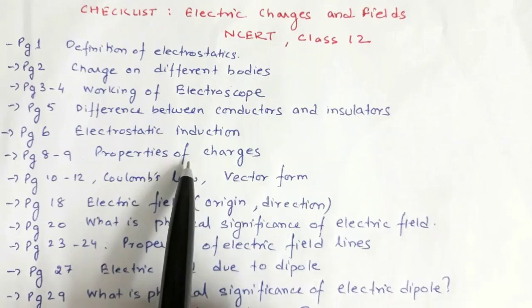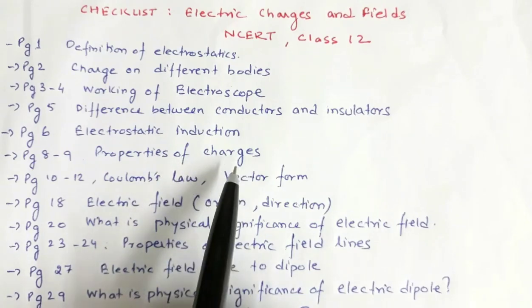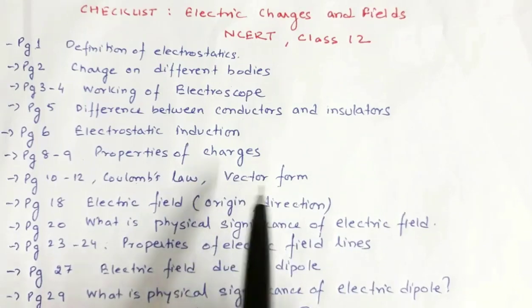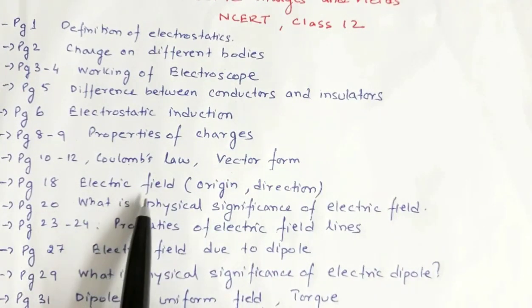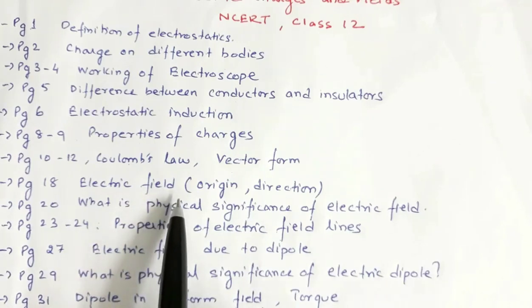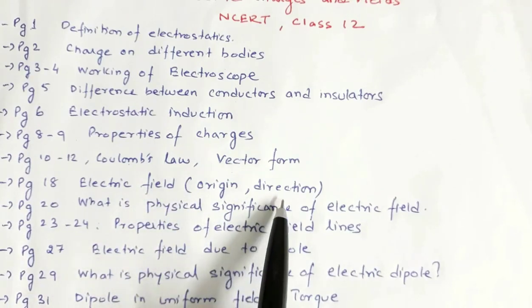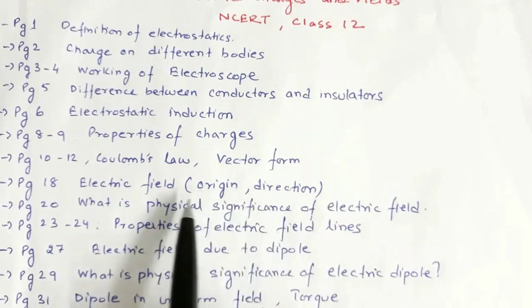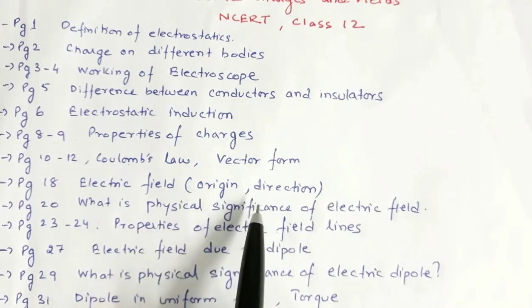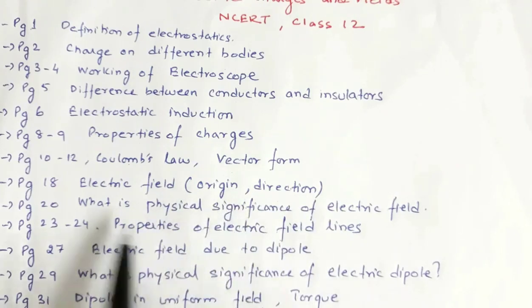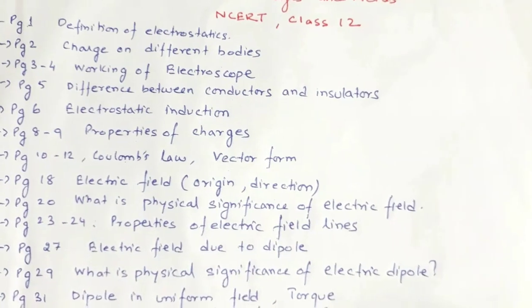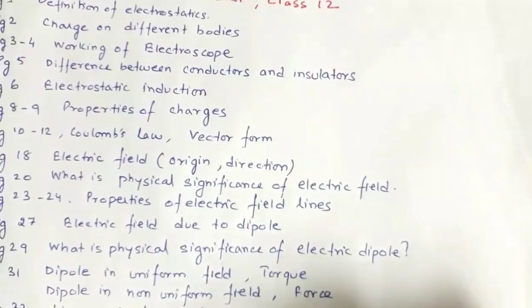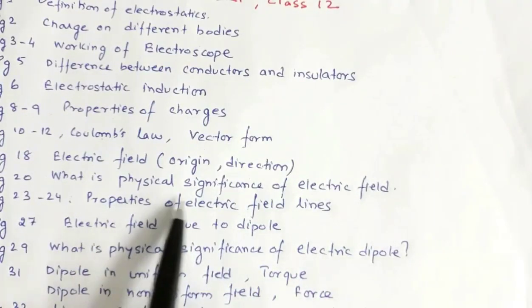If you have three properties, then you have quantization of charge. Page 18 is the electric field. The origin of electric field and direction of positive charge and negative charge. Page 20 is the physical significance of electric field. Then you have to read the textbook.